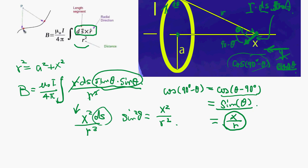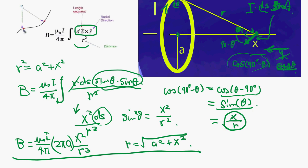B is going to be μ₀I/(4π) times 2πa times x²/(a² + x²)^(3/2). So we can calculate the B at this point.